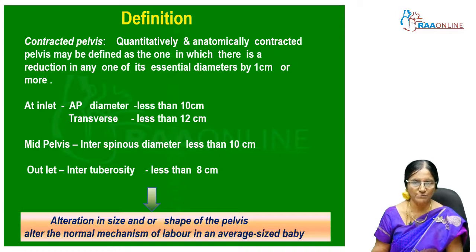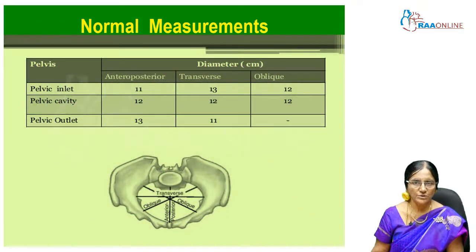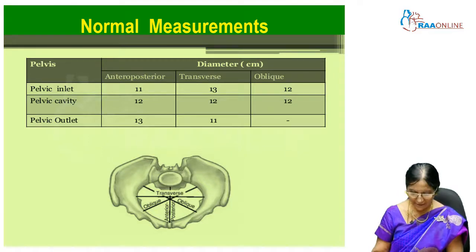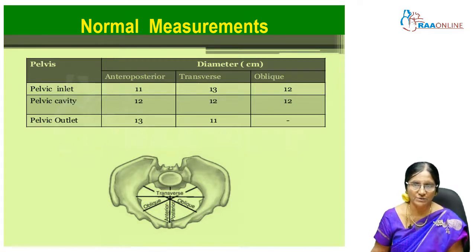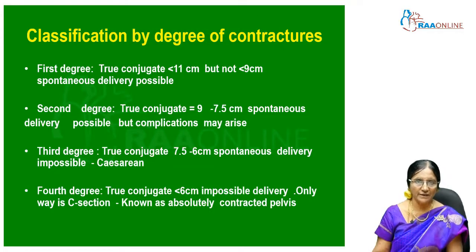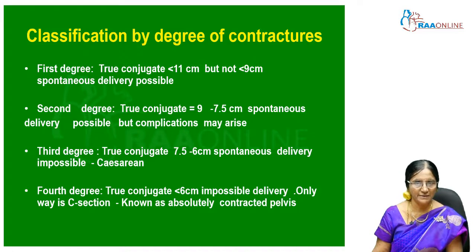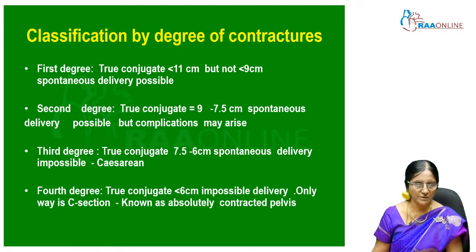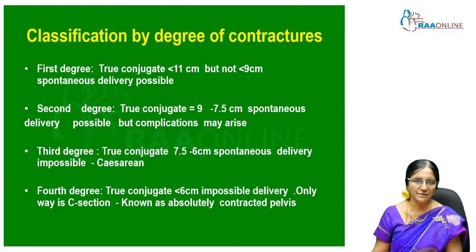Any alteration in size or shape of the pelvis alters the normal mechanism of labor in an average-sized baby. The normal pelvic inlet anteroposterior diameter is about 11 cm and transverse is 13 cm; at the pelvic outlet it is reversed — 13 cm anteroposterior and transverse is 11 cm. There are four degrees: first degree when true conjugate is less than 11 cm; second degree, true conjugate 9 to 7.5 cm; third degree, 7.5 to 6 cm; fourth degree, less than 6 cm. In second degree complications can arise; in third degree only cesarean can be done; and fourth degree is an absolutely contracted pelvis.